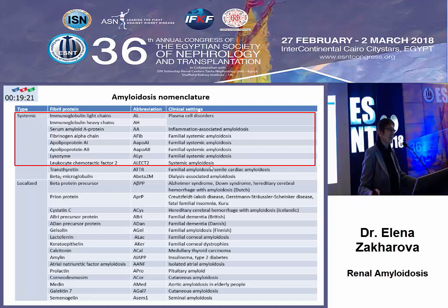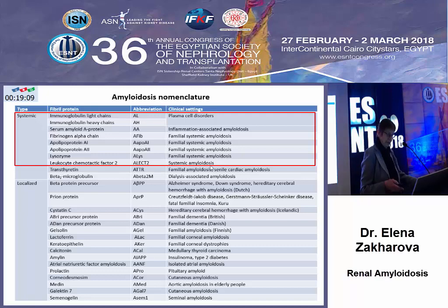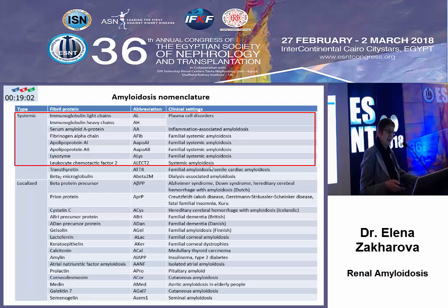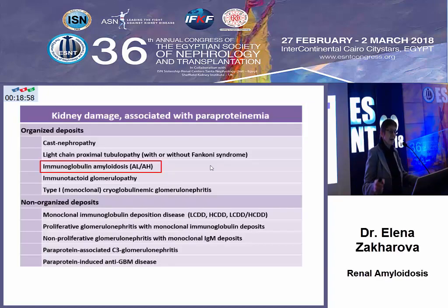Otherwise our diagnostic challenge would be really huge. As we are talking today about paraproteinemia and kidneys, I will focus only on those two types of amyloidosis — in fact, one type of amyloidosis, which is AL amyloidosis, and it is indeed paraproteinemia.